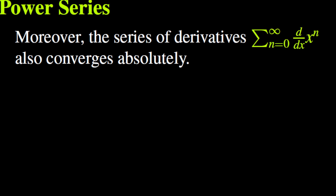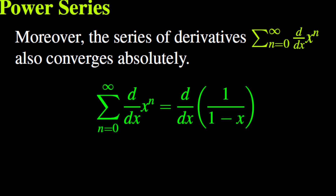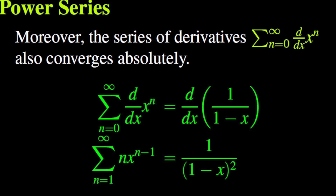According to the absolute convergence theorem, the series of derivatives of x to the power n also converges absolutely to the derivative of the sum. So we have: the sum of the derivatives of x to the power n equals the derivative of 1 over 1 minus x. This means the series n times x to the power n minus 1 equals 1 over (1 minus x) squared, because the derivative of x to the power n is n times x to the power n minus 1, and the derivative of 1 over 1 minus x is 1 over (1 minus x) squared.